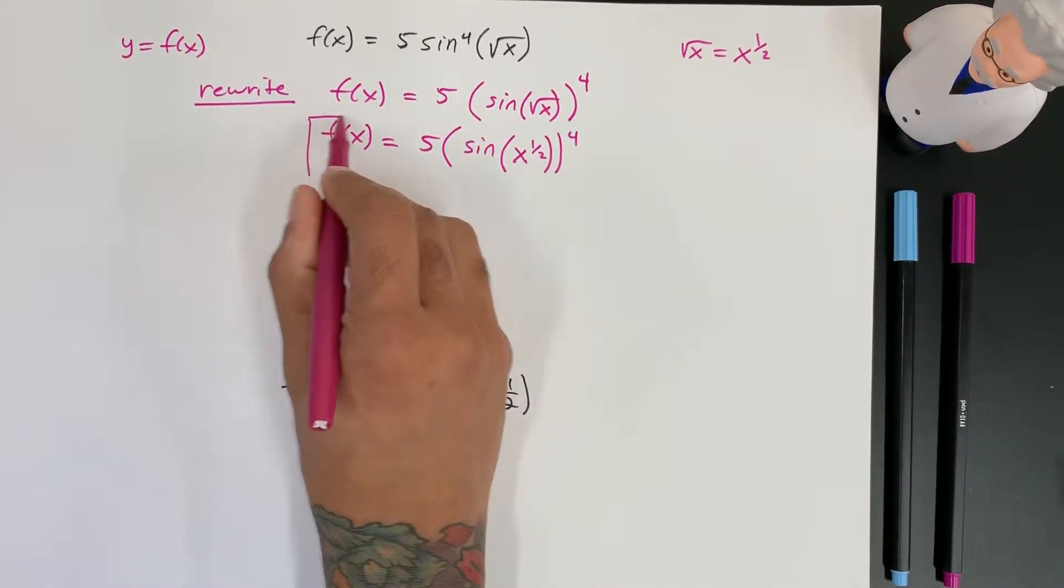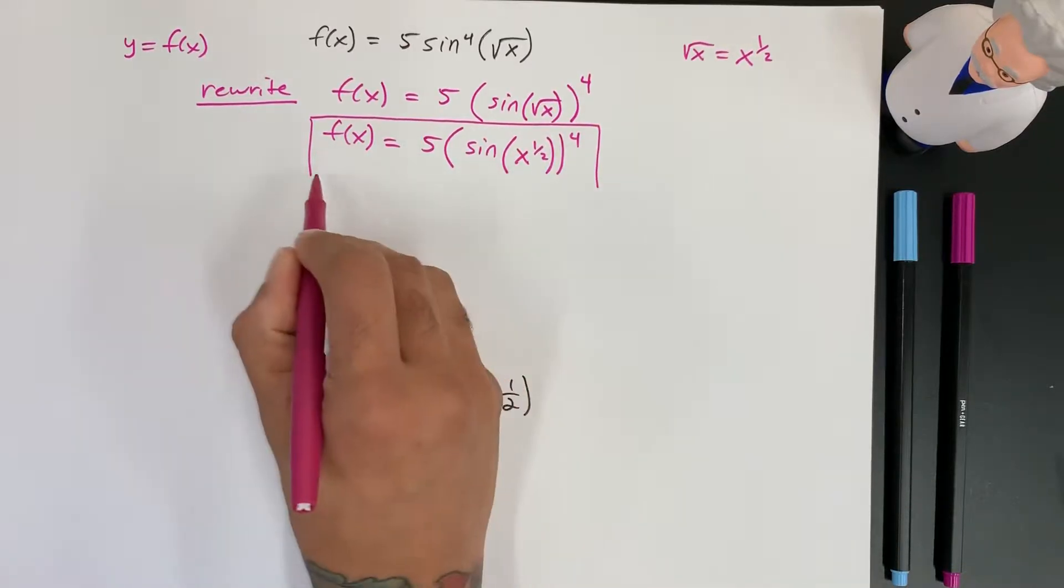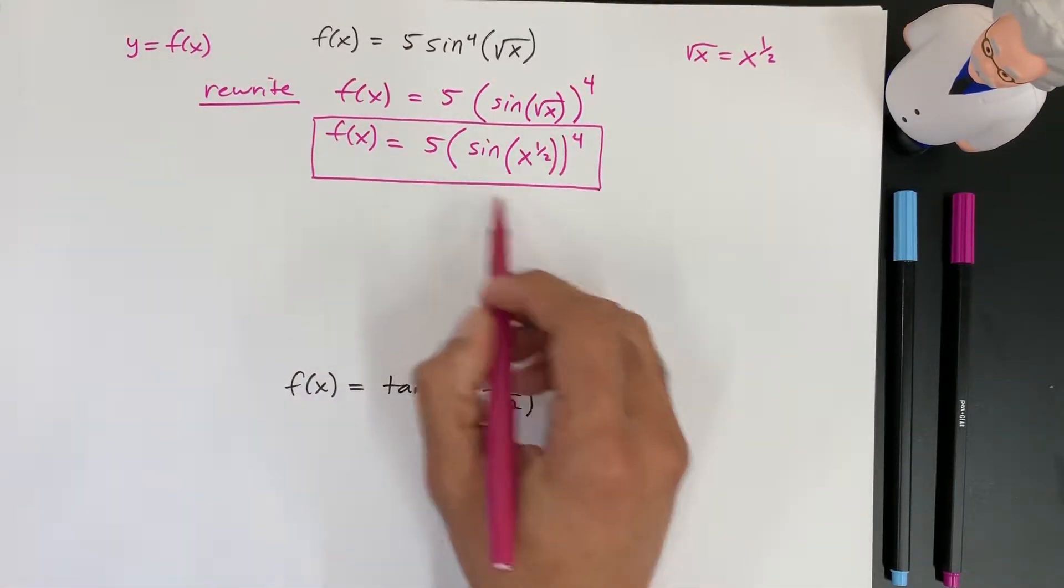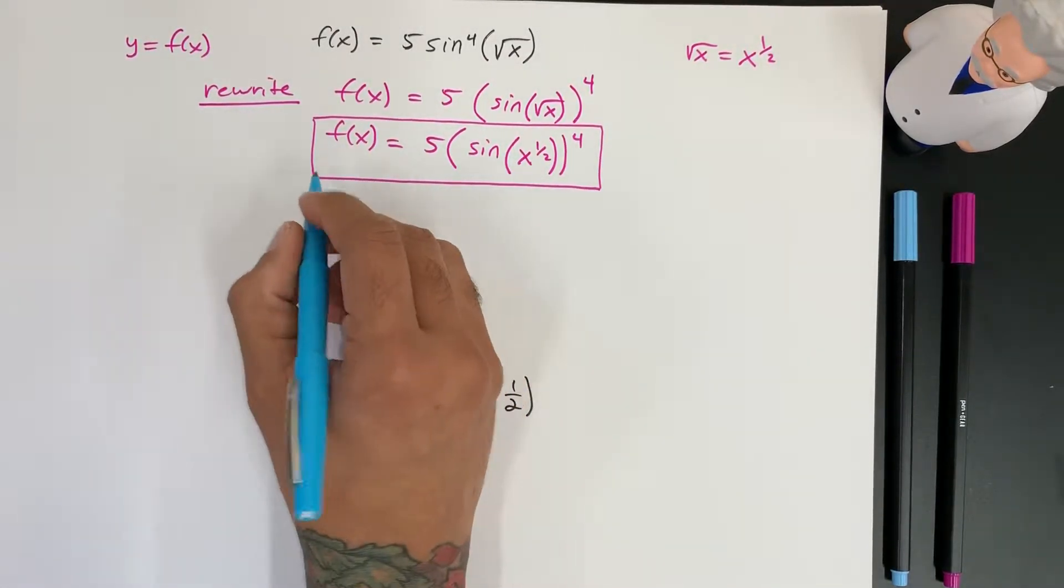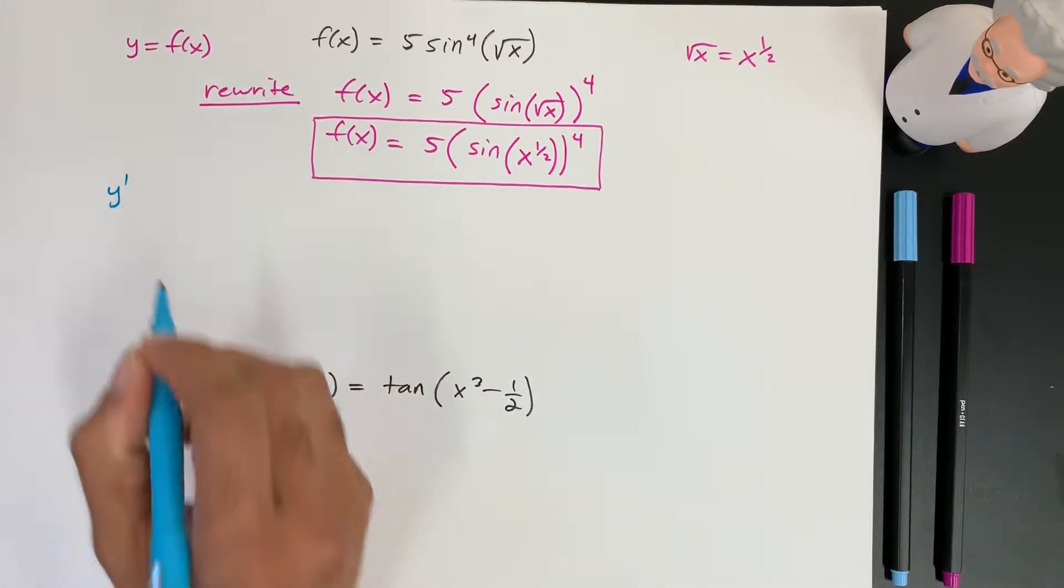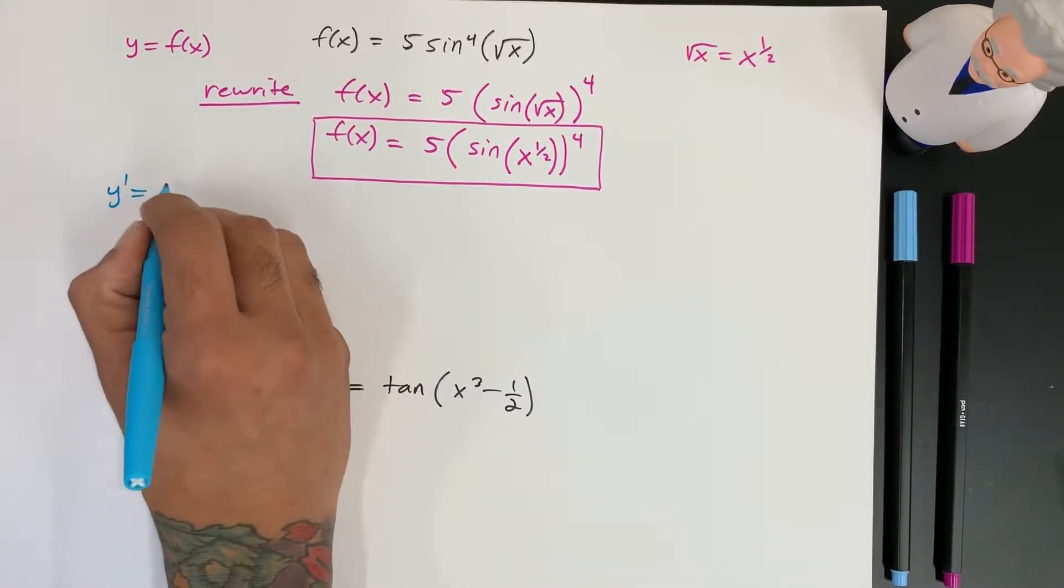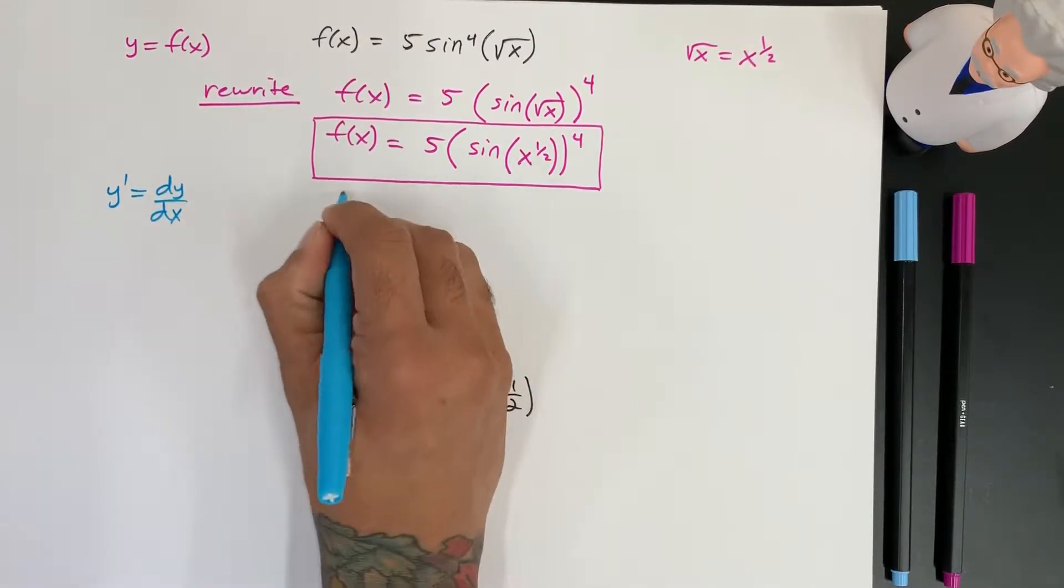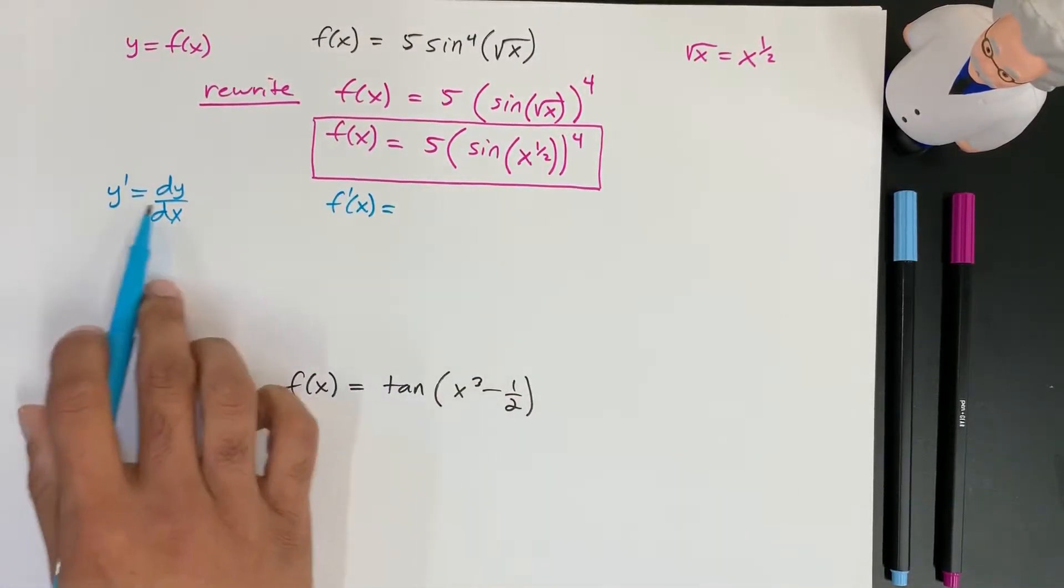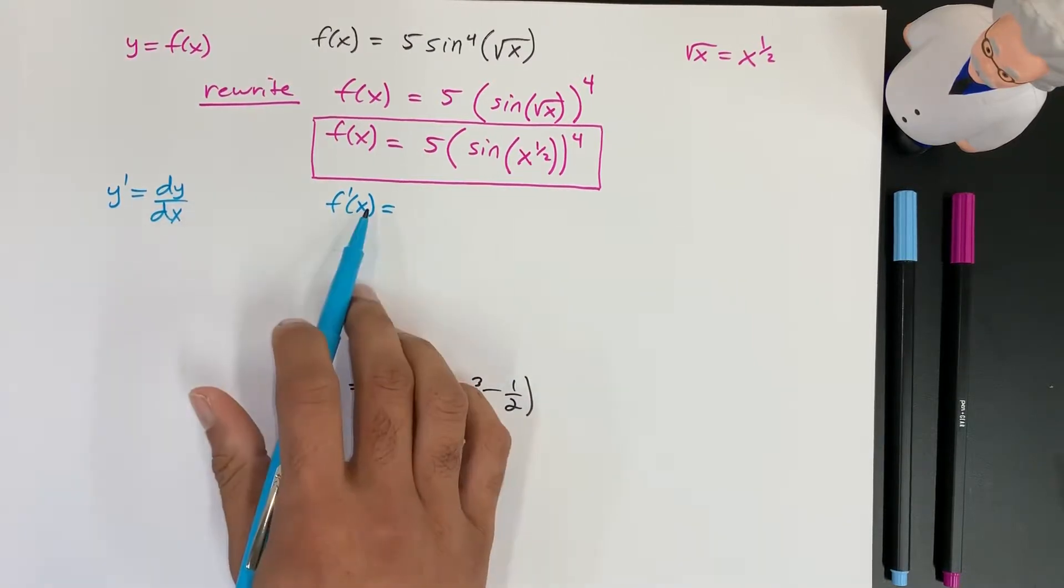Now from here I feel comfortable starting, because now I can see everything clear and when I take the derivatives it's not going to be hard to understand what's going on. So I can write y prime, or I can write dy/dx, or I can write f'(x). They all mean the same thing. So all these terms mean the same thing, derivative.